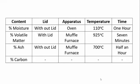Let us summarize. Percentage of moisture was calculated without a lid in an oven at 110 degrees Celsius for one hour. Percentage of volatile matter was calculated with a lid in a muffle furnace at 925 degrees Celsius for seven minutes. Ash was calculated without a lid in a muffle furnace at 700 degrees Celsius for half an hour. And percentage of fixed carbon was calculated by subtracting the other three from 100.